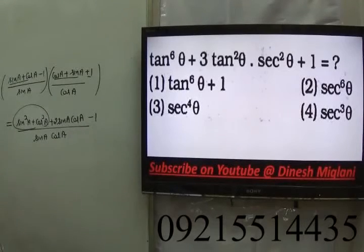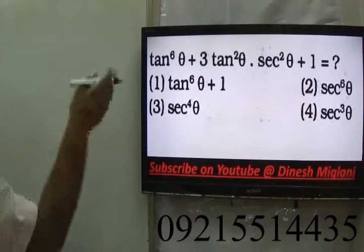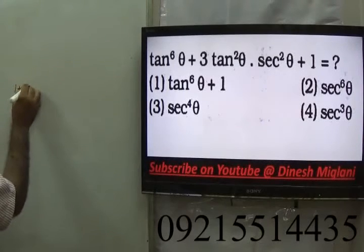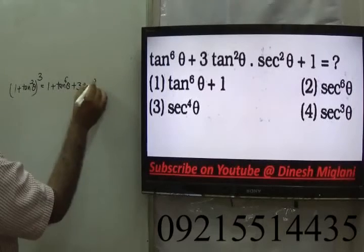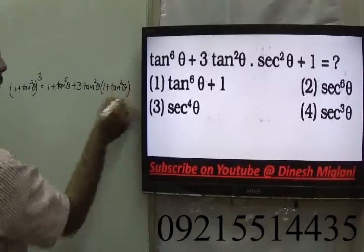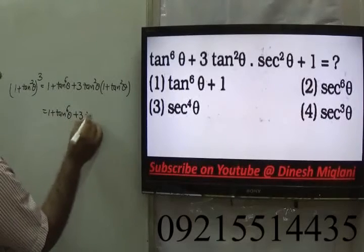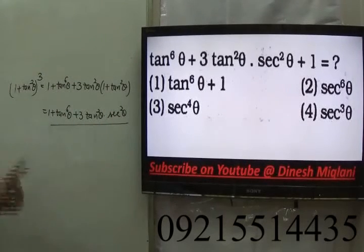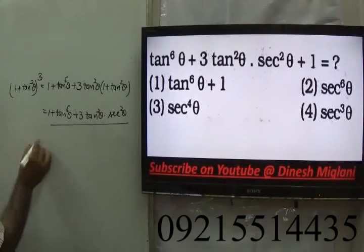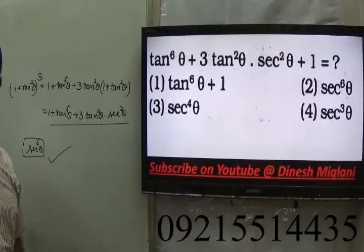Next: tan⁶θ + 3tan²θ·sec²θ + 1. Recognizing this matches the expansion of (1 + tan²θ)³ = 1 + tan⁶θ + 3tan²θ(1 + tan²θ). Since 1 + tan²θ = sec²θ, this expression equals (1 + tan²θ)³ = sec⁶θ. Hence the answer is sec⁶θ, option 2.